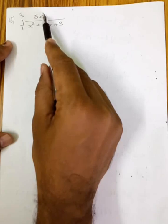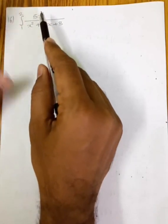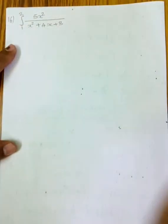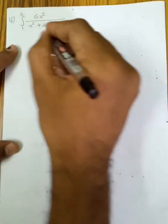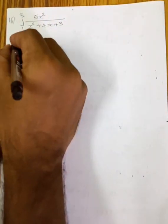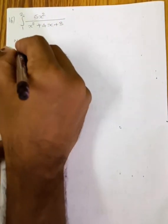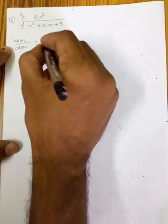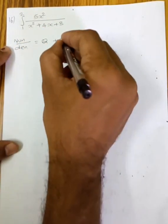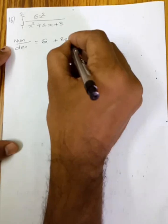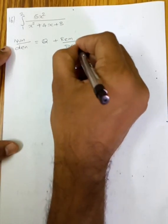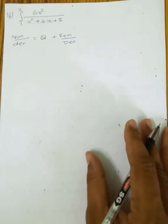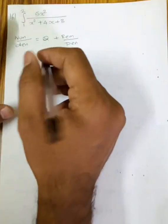When numerator and denominator degree is the same or greater than denominator, we use the concept: numerator divided by denominator equals quotient plus remainder divided by denominator. We apply this formula and sum the result.